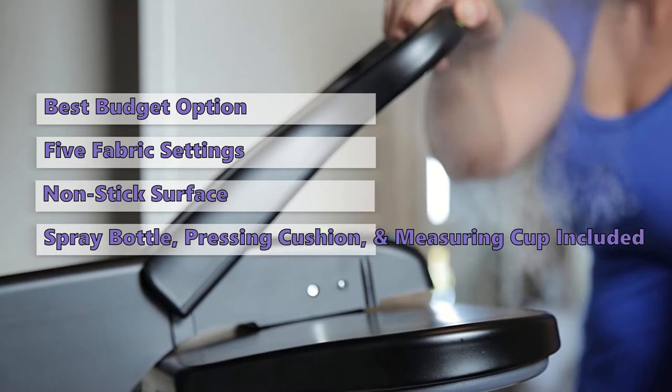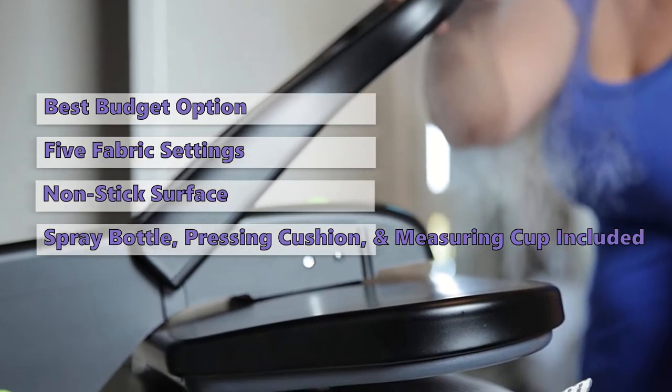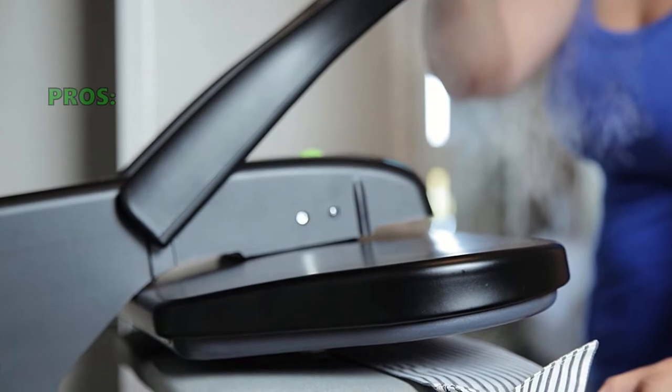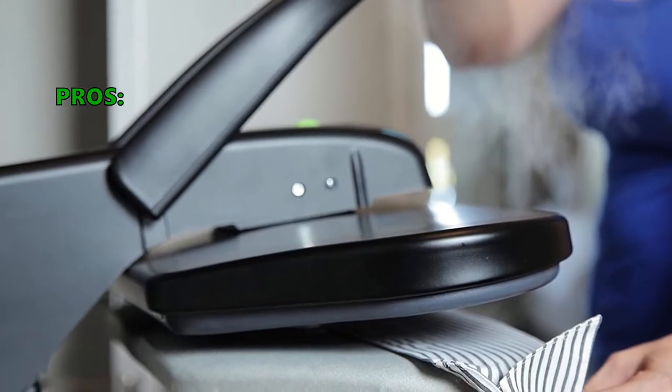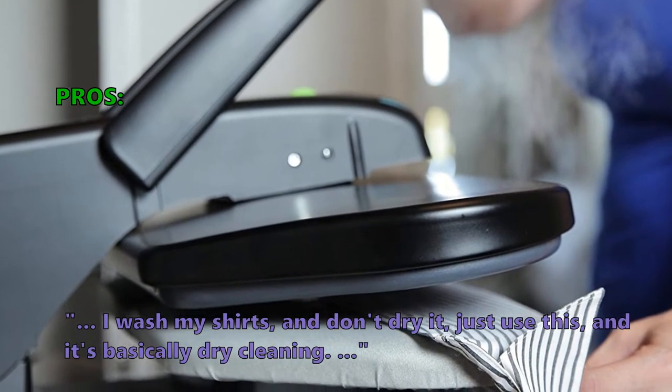The SF-623 is great for pressing and restoring creases and smoothing out wrinkles on clothing and bed linens. Many of the users that have reviewed this say, I wash my shirts and don't dry it, just use this and it's basically dry cleaning. Small enough to store in any size closet.